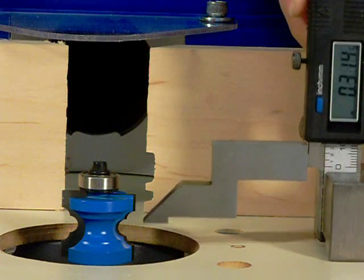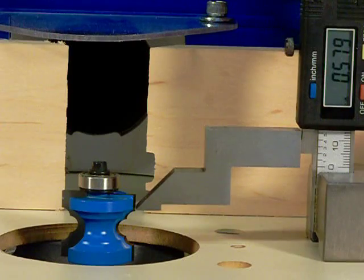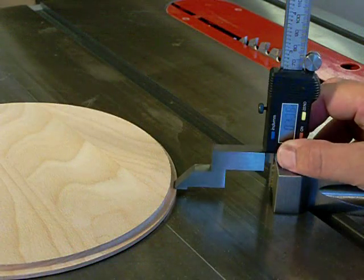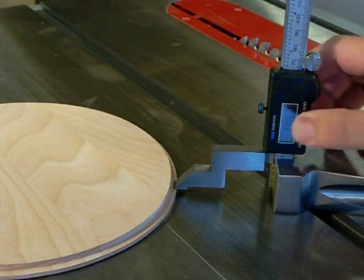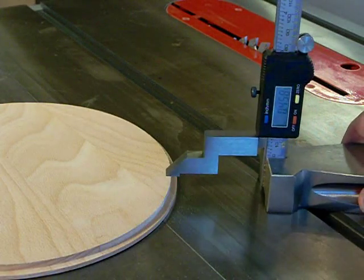The adjustment wheel allows for very fine movement of the head along the beam of the height gauge. Being digital, the Rockler Height Gauge can be zeroed out at any point, allowing you to measure the difference between two points on an existing part as shown here.